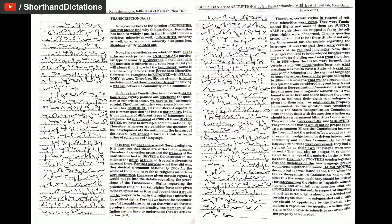They found that it would not be proper to set up a permanent minorities commission because the result, if not the actual effect, would be that a permanent wedge would be driven between one community and another community.